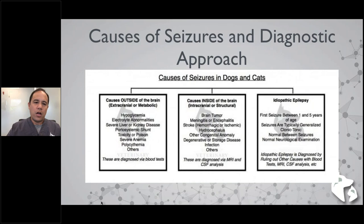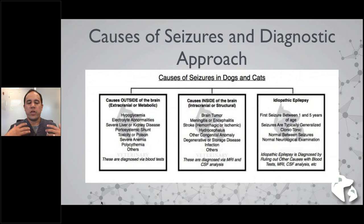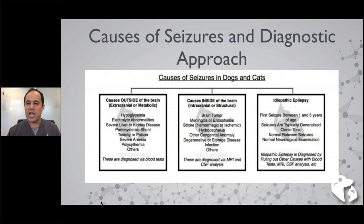I break causes of seizures into three main categories. First, things outside of the brain — extracranial or metabolic causes — where the brain isn't physically wrong but is secondarily affected. These include hypoglycemia, portosystemic shunts, electrolyte abnormalities, severe liver disease, severe kidney disease, severe anemia, and polycythemia. Most of these can be ruled out with blood tests: CBC, chemistry, urinalysis, bile acids.